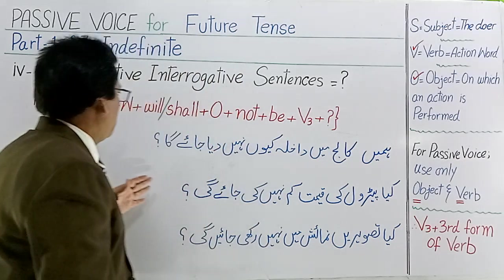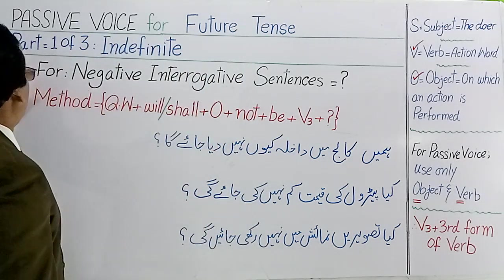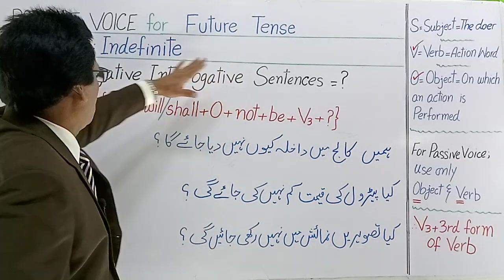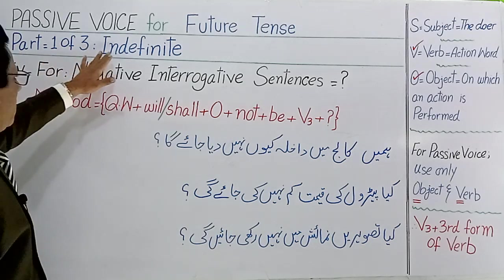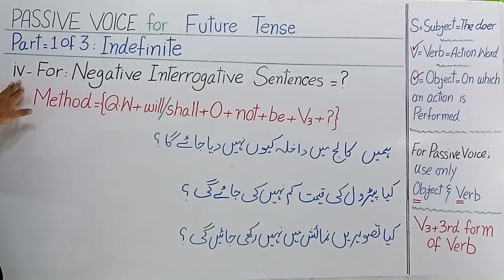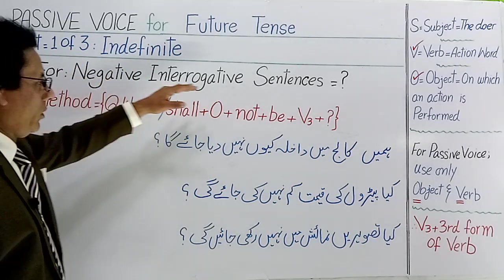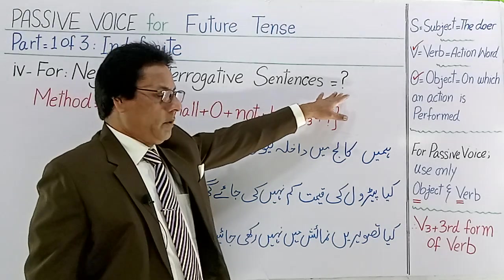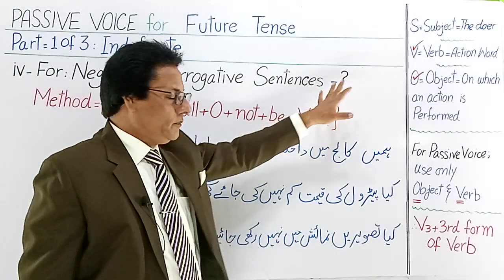Let's see here. Passive voice for future tense. Part 1 of 3 indefinites. Last part — number 4 — for negative interrogative sentences, followed by a question mark.